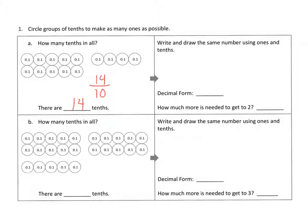Let's pull out the wholes we see in fourteen-tenths. We can pull out one whole, which would be ten-tenths, and then we're left with four-tenths. So our mixed number is one and four-tenths. As a decimal, we have one whole and the four is in the tenths place — so 1.4. How much more do we need to get to two, the next whole? If we've got four-tenths, we would add six-tenths to get to that next ten-tenths.